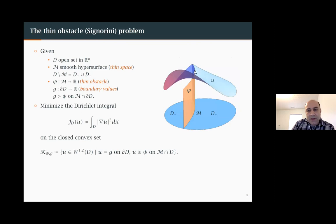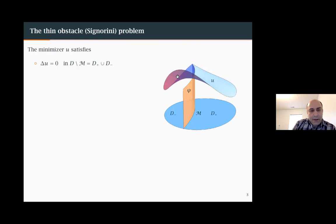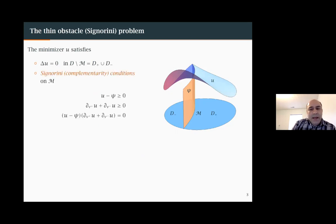We want to minimize the Dirichlet integral among all functions with given boundary values G that stay above the graph of the obstacle C, i.e., U ≥ C. The minimizer will look like it sticks to the graph of the obstacle in some parts, but away from the thin space it will not. On the thin space itself there could be parts where it is lifted, strictly above the thin obstacle. Away from the thin space, in D minus and D plus, the minimizer will simply be harmonic because there is no constraint there.